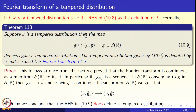Let us now get to the formal definition of the Fourier transform of a tempered distribution. Suppose u is a tempered distribution. Then the map g — going over the Schwarz class — sending g to the pairing of u with g-hat, is a tempered distribution. The tempered distribution given by equation 10.9 is denoted u-hat and is called the Fourier transform of u. So u-hat paired with g is the same as u paired with g-hat: the left-hand side is the object we are trying to define, the right-hand side is the definition.